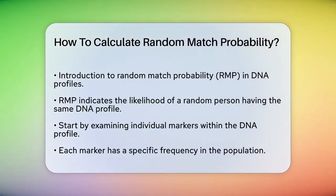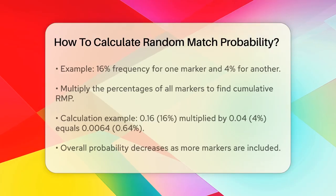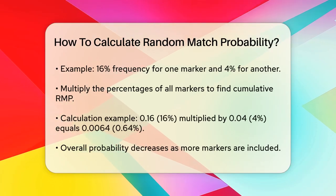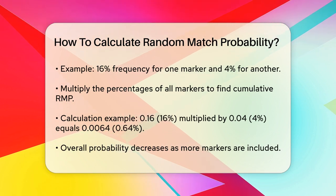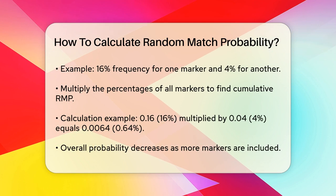Each marker has its own frequency in the population. For instance, at one marker location, 16% of the population has a specific combination of alleles, like 10 and 11. At another marker, maybe 4% of the population has a different specific combination. You multiply these percentages together for all the markers. This is called the cumulative random match probability.